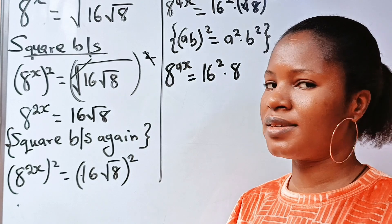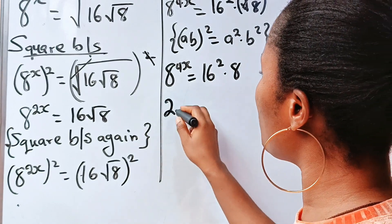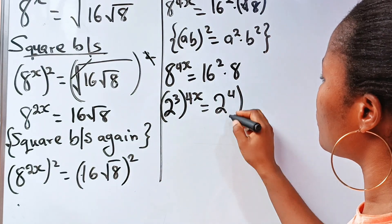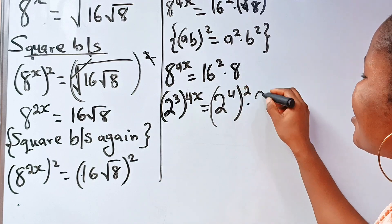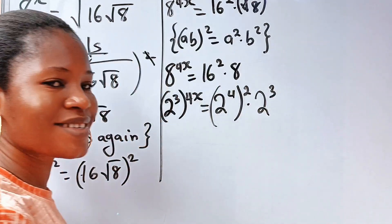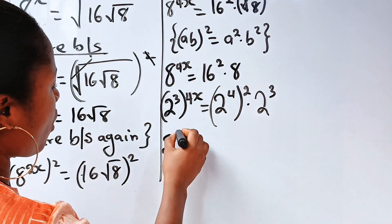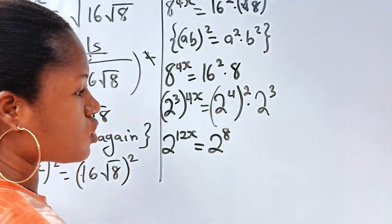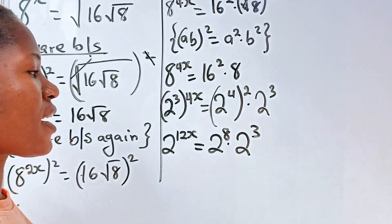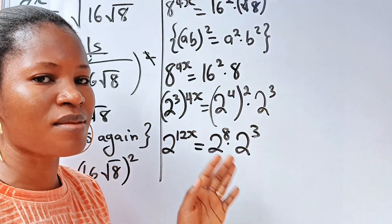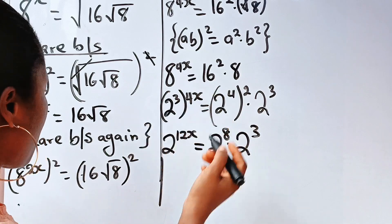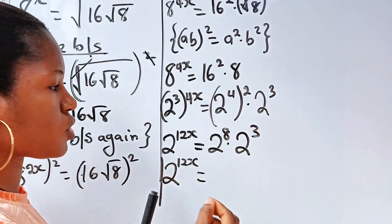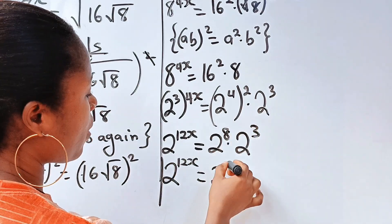Now let's put everything in the same base. So 8 is 2 to the power of 3, raised to the power of 4x, is equal to 16 which is 2 to the power of 4, raised to the power of 2, multiplied by 8 which is 2 to the power of 3. So we have 2 to the power of 12x is equal to 2 to the power of 8 — since 4 times 2 is 8 — multiplied by 2 to the power of 3.